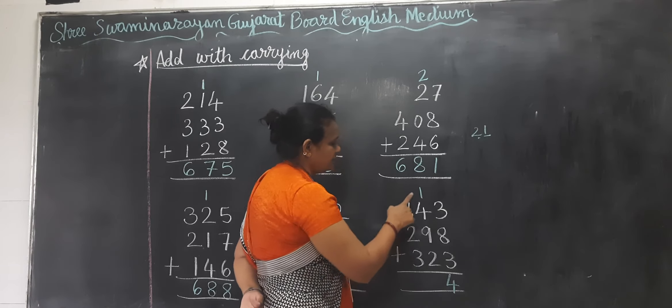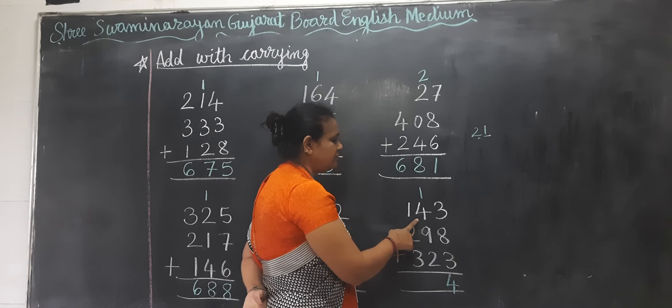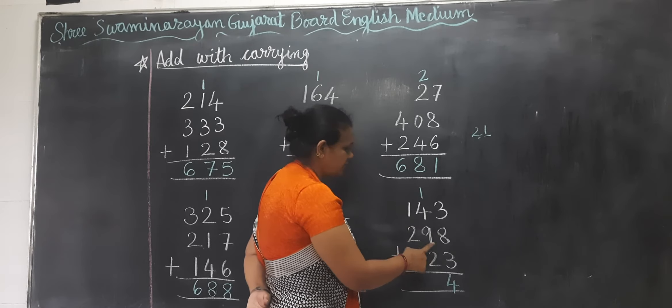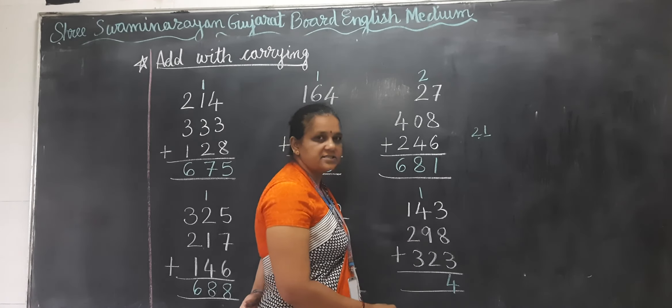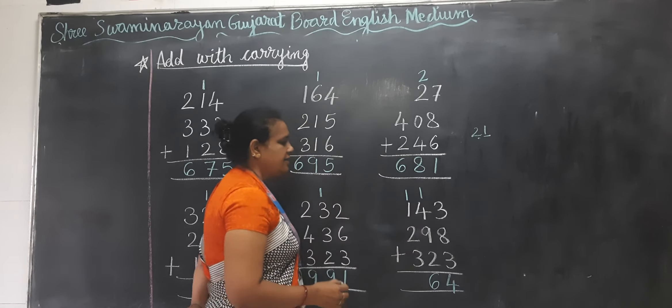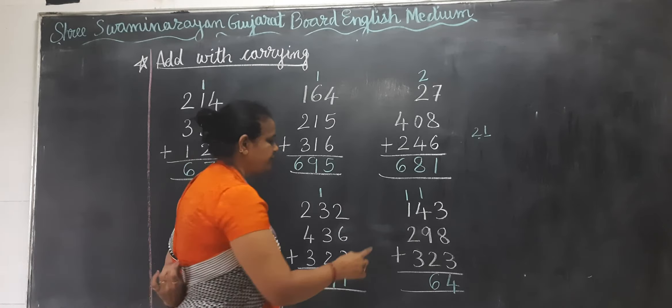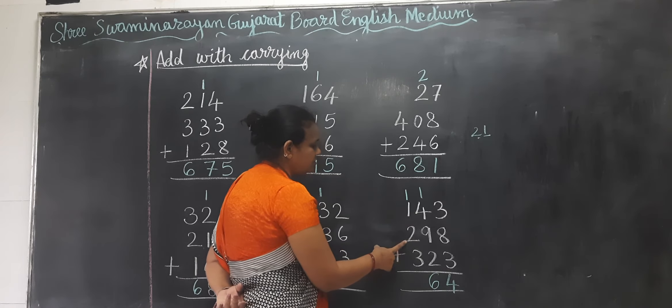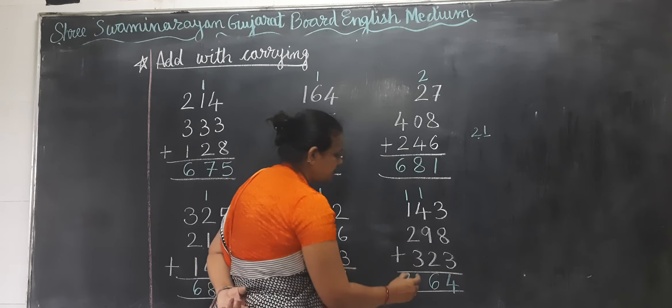Again 1. 1 plus 4 equals 5. 5 plus 9 equals 14. 14 plus 2 equals 16. So 6 here and 1 carry forward. Now 1 plus 1 equals 2. 2 plus 2 equals 4. 4 plus 3 equals 7.